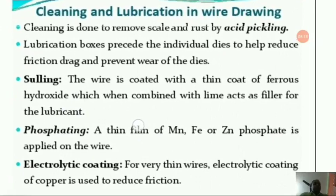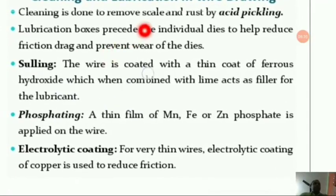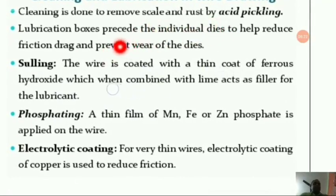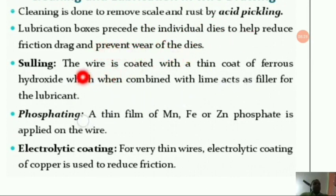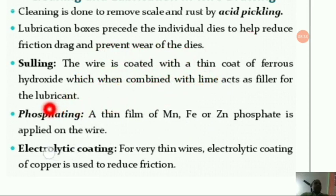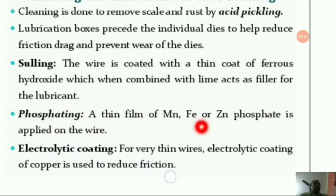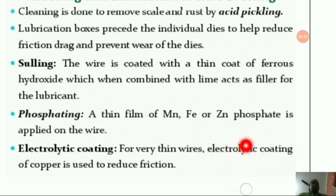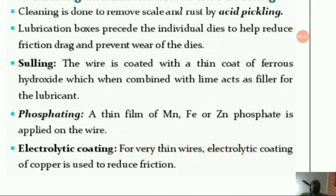Cleaning and lubrication in wire drawing: cleaning is done to remove scale and rust by acid pickling. Lubrication boxes precede the individual dies to reduce friction, drag, and prevent wear. Sooling: the wire is coated with a thin coat of ferrous hydroxide which, combined with lime, acts as a filler for the lubricant. Phosphating: a thin film of manganese, iron, and zinc phosphate is applied to the wire. Electrolytic coating of copper is used for very thin wires to reduce friction.